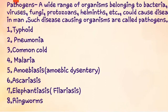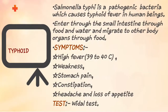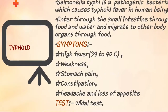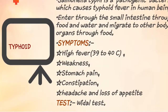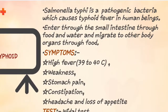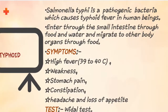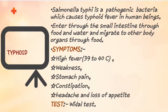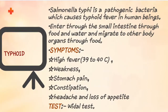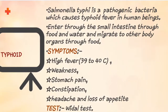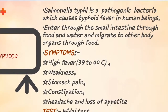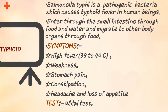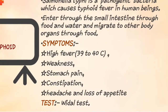First we will discuss typhoid. It is caused by Salmonella typhi, which is a pathogenic bacterium that causes fever in humans. This pathogen enters the small intestine through contaminated food and water, affects the small intestine, and migrates to other body parts through blood. Symptoms include fever, weakness, stomach pain, constipation, headache, and loss of appetite. This can be confirmed by a Widal test.